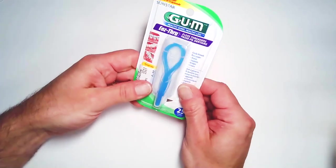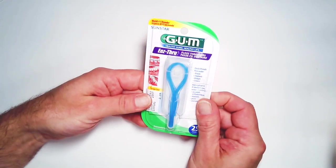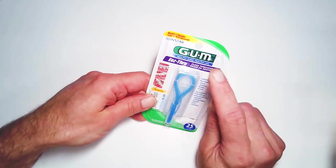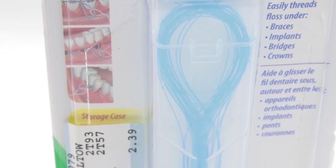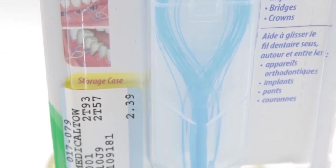This is what I got - a floss threader. I know that it probably comes in other brands than this Gum brand, but anyhow, it looks like this.